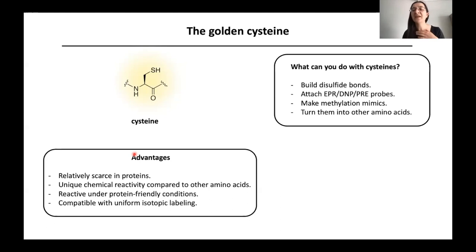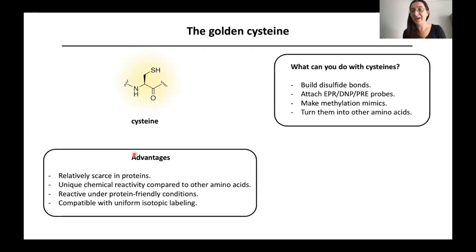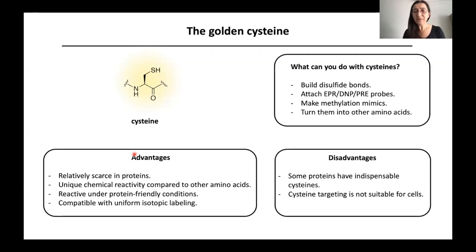There are many things you can do with cysteines. We can use them to build disulfide bonds, attach spectroscopic probes, and — less familiar to some — we can take cysteines and make methylation mimics, very useful for introducing methylation as a post-translational modification. My favorite is taking a cysteine and turning it into other amino acids, which can be very helpful in some contexts. One disadvantage: if native cysteines cannot be mutated out, cysteine chemistry becomes limited.